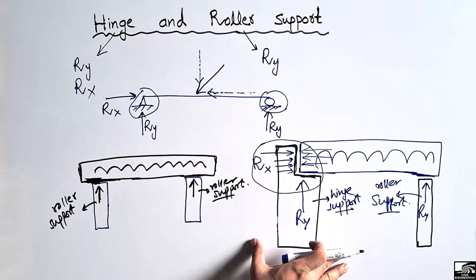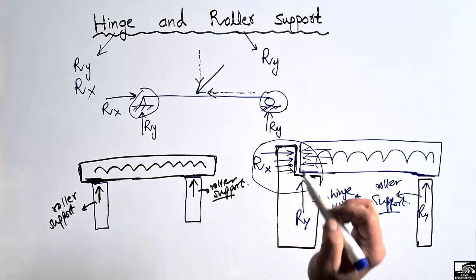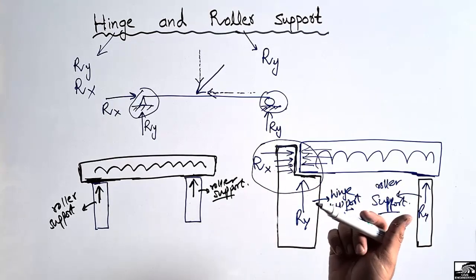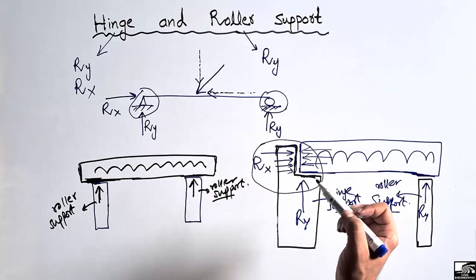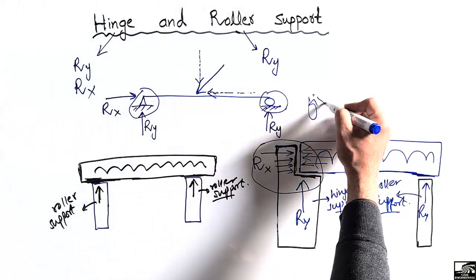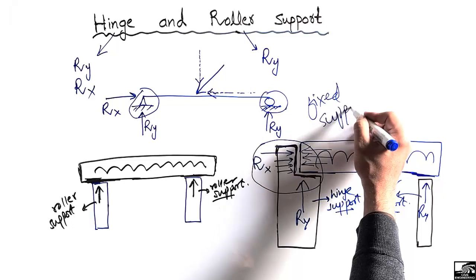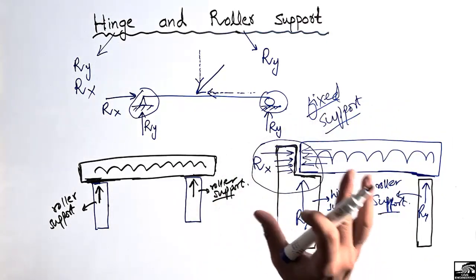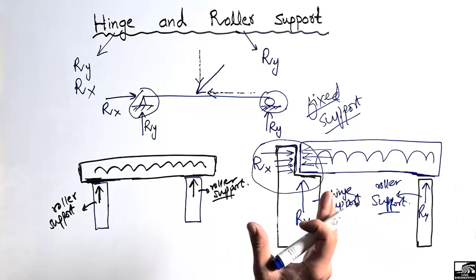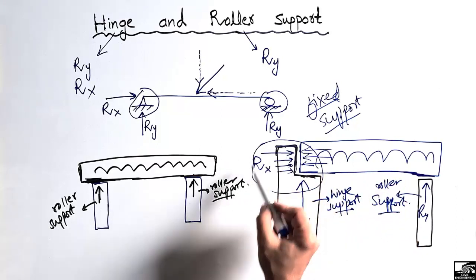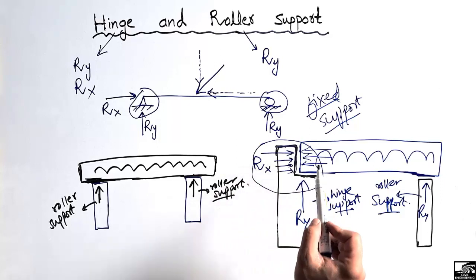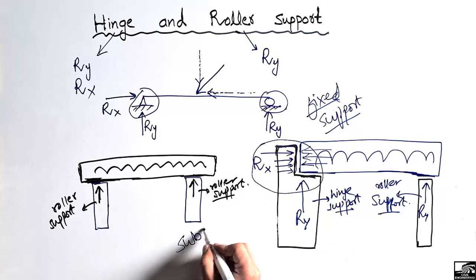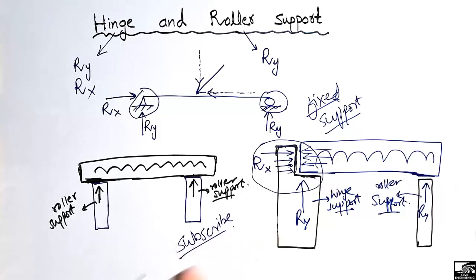The main purpose was to differentiate between these two types of supports and show where we use them practically. If we use the reinforcement of this beam inside the column, then we have another type of support called the fixed support, but we will discuss this in another lecture. The fixed support is created by connecting two structural members through reinforcement. Without reinforcement, we have the roller and hinge support. Hope you guys understand — don't forget to subscribe to our channel for civil engineering videos. Thank you for watching.